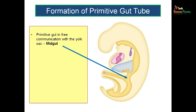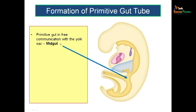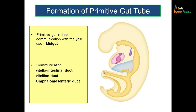The foregut is cranial to the communication of the primitive gut with the yolk sac, and the hindgut is caudal to that communication. The midgut is actually the part of the primitive gut which is communicating with the yolk sac. The communicating link between the primitive gut and the yolk sac is known as the vitello-intestinal duct, also called the vitelline duct or the omphalomesenteric duct. These are the different names given to the communication between the midgut and the yolk sac.